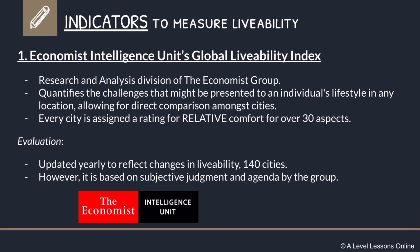The first indicator we have is the Economist Intelligence Unit Global Livability Index. This is by the Economist Group — many of you have heard of them. Essentially, this is the research and analysis division of the Economist Group. What they do is quantify any sort of challenge presented to an individual's lifestyle in any location — assessing both the challenges and the positives faced. As a result, each city is assigned a rating on relative comfort, comparing how livable cities are across 30 different aspects.